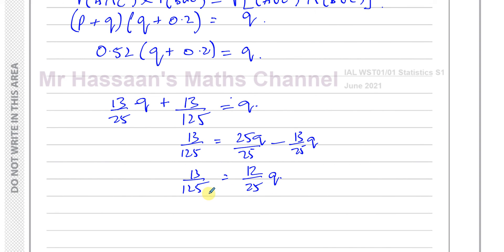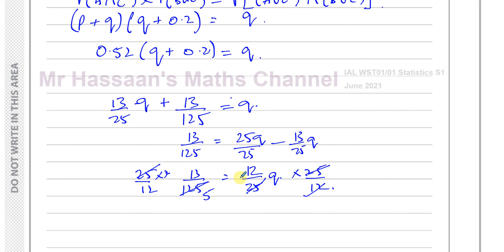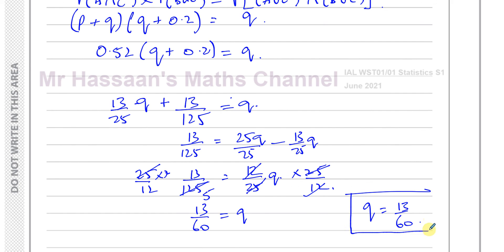Multiplying both sides by 25 and dividing by 12: Q = (13 × 25) / (125 × 12) = 13/60. So Q = 13/60.